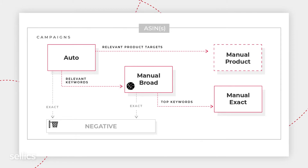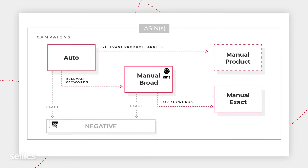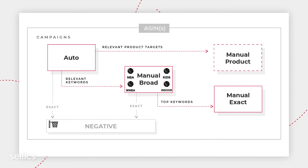A Manual Broad campaign is a hybrid campaign because it has an automated part to it. The term Basketball will actually disappear and the Manual Broad ad group will test broad variations of that search term. For example: Basketball for Kids, Basketball NBA, Basketball WNBA, and Basketball Indoors.